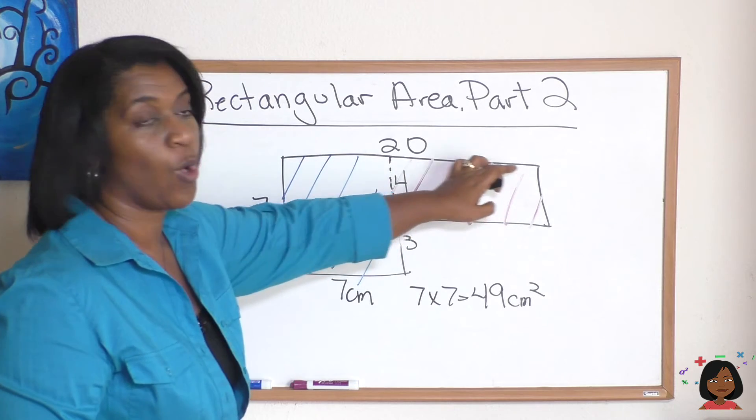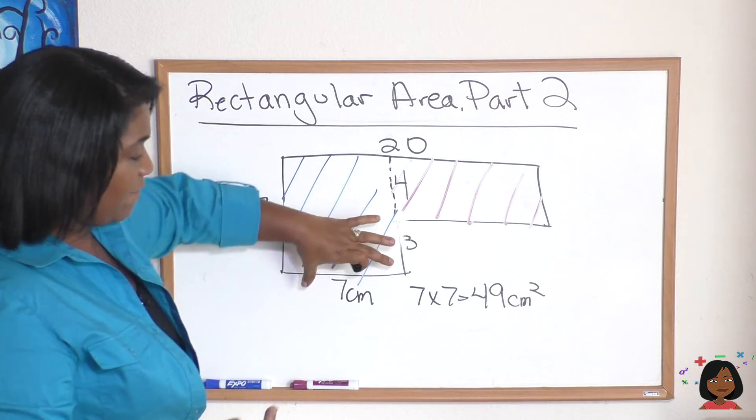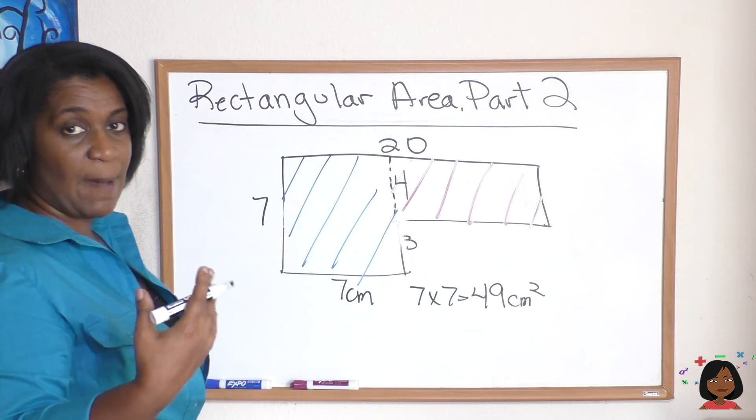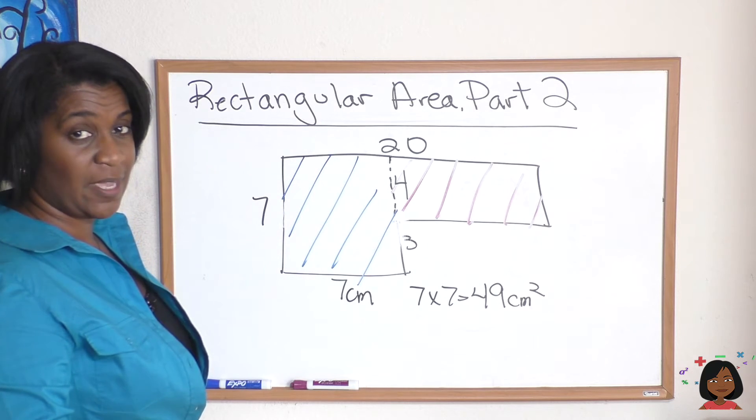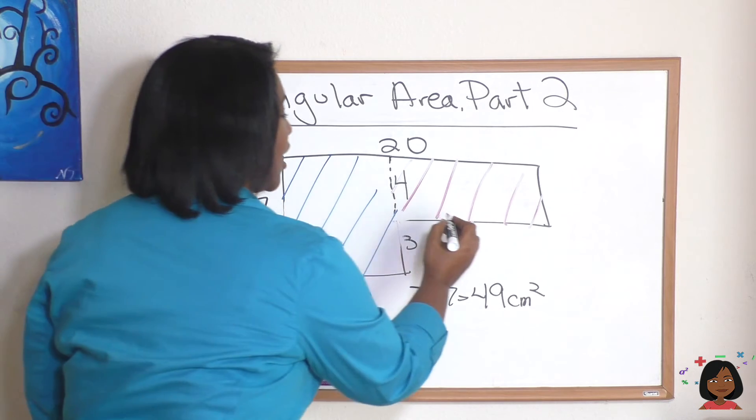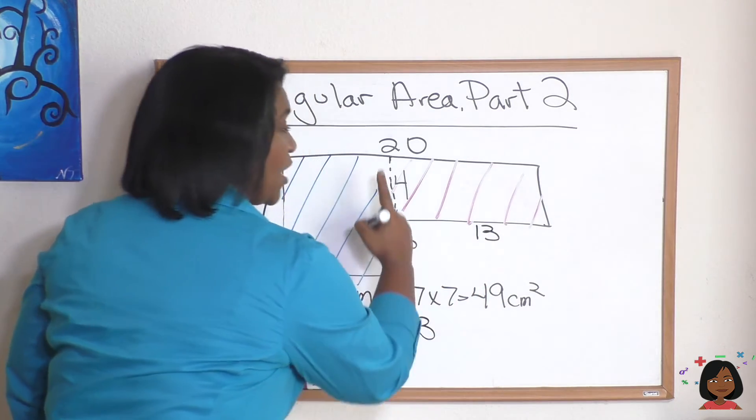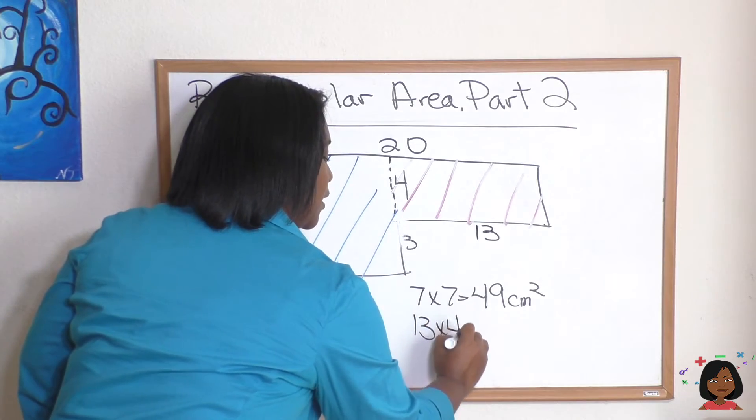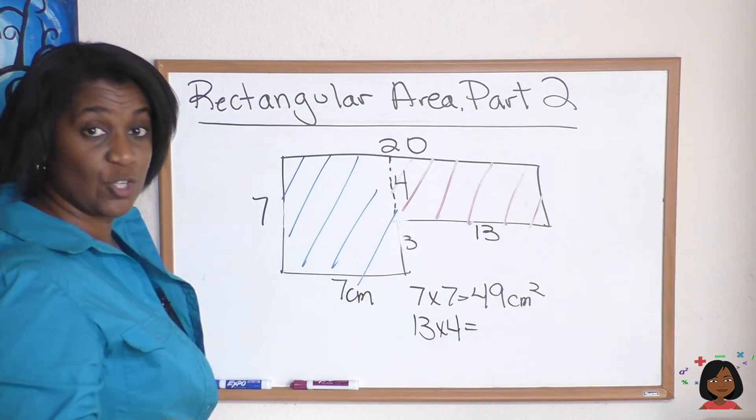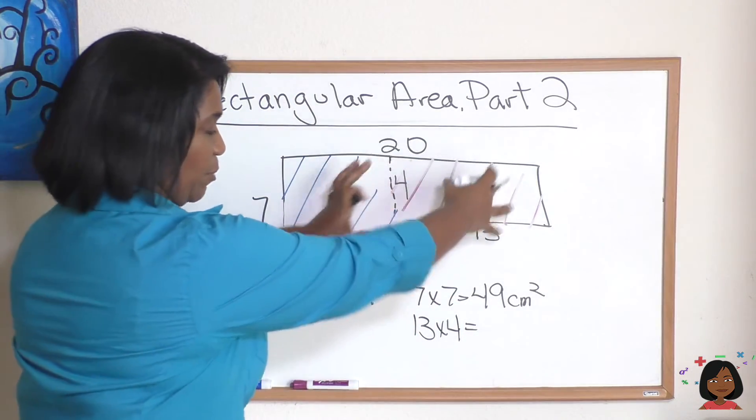Well, we know the top of the whole thing is 20. And if this side is seven, that must mean the remainder must be 13. Good job. So 13 is my length times four, which is my width. And now I can do my length times width for this purple section.